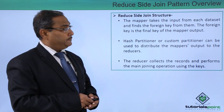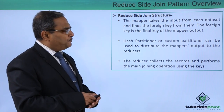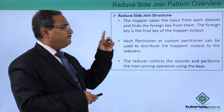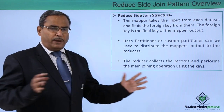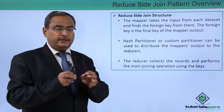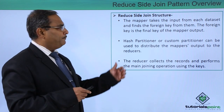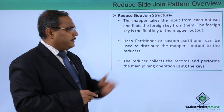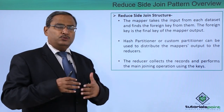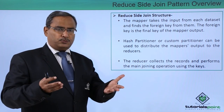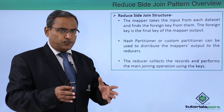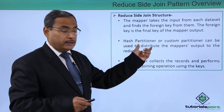Reduce-side join structure: the mapper takes the input from each dataset and finds the foreign key from them. Multiple datasets will be taken by the mappers and it will find the respective foreign key between them. The foreign key is the final key of the mapper output.